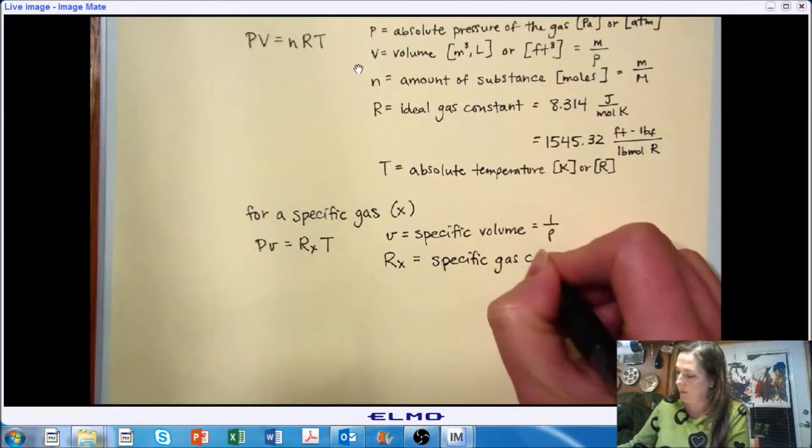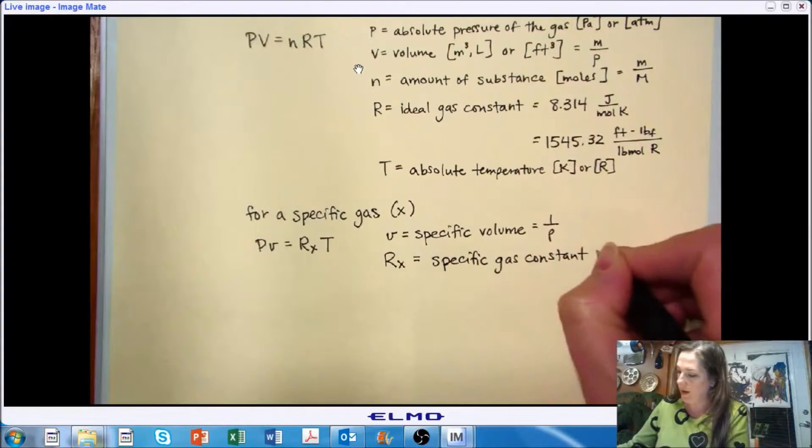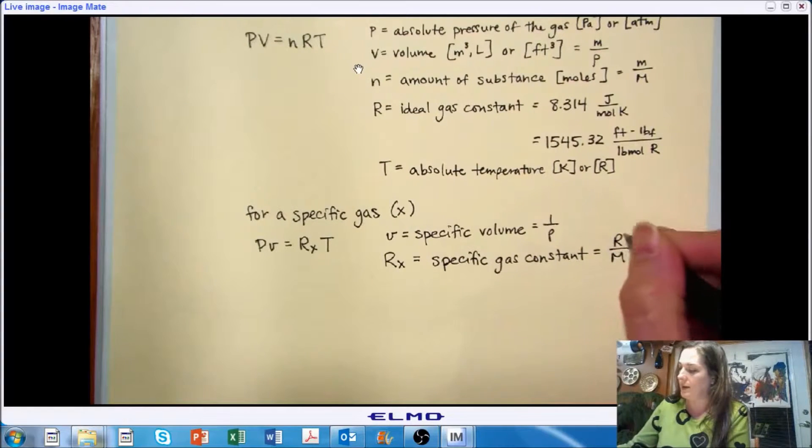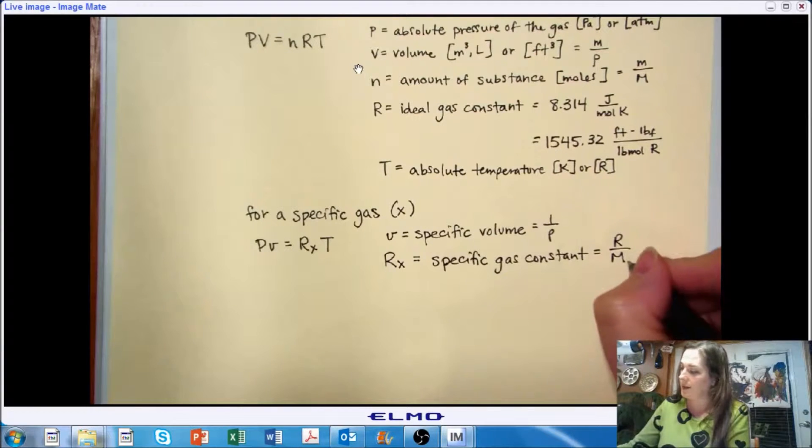And that can be also represented by the ideal gas constant divided by the molecular mass of the substance X that we're working with.